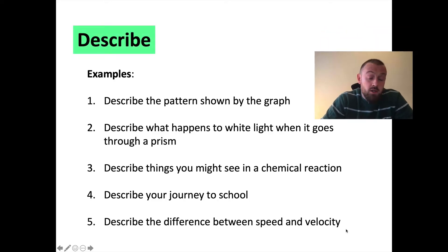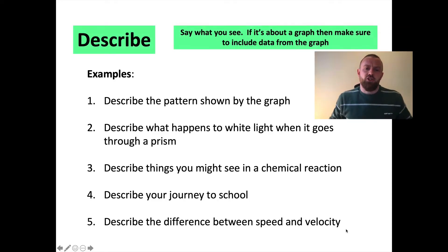So let's get into the meaning of these major command words in biology. First of all, we've got describe. A describe question basically is just say what you see. If it's about a graph, especially if it's like a three marker, then you should definitely include data from the graph - say at what point it levels off, for example. Here are some examples: describe the pattern shown by a graph, describe what happens to white light, describe things you might see, describe your journey to school, describe the difference between speed and velocity, or describe the process of ultrafiltration. That's describe.